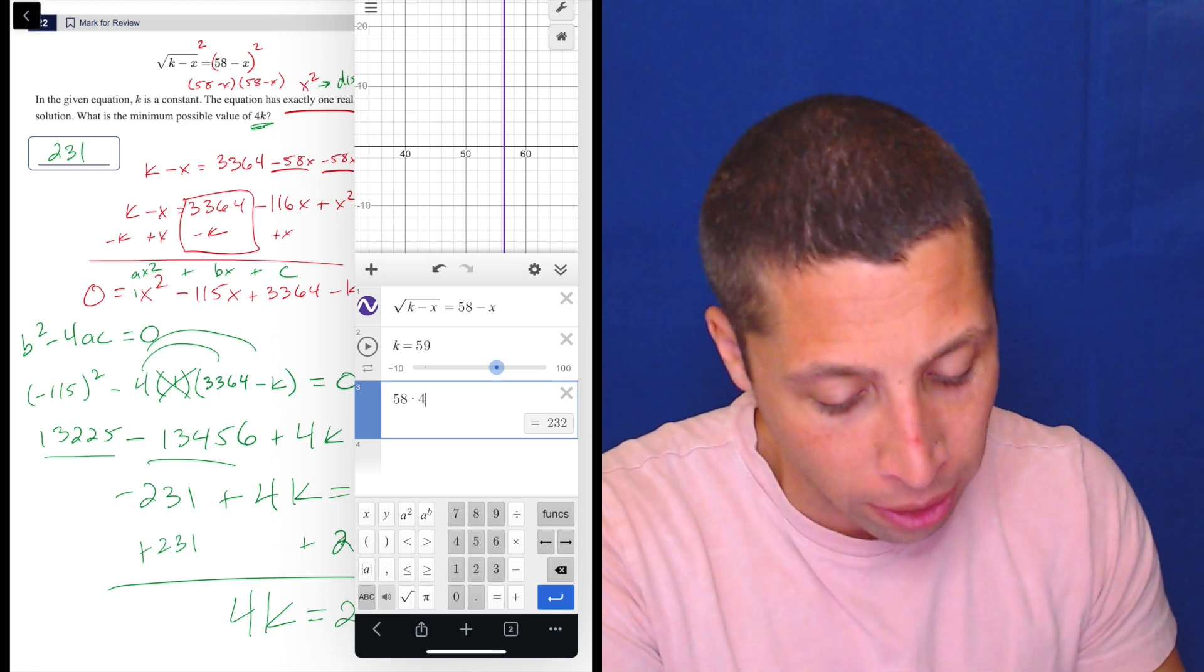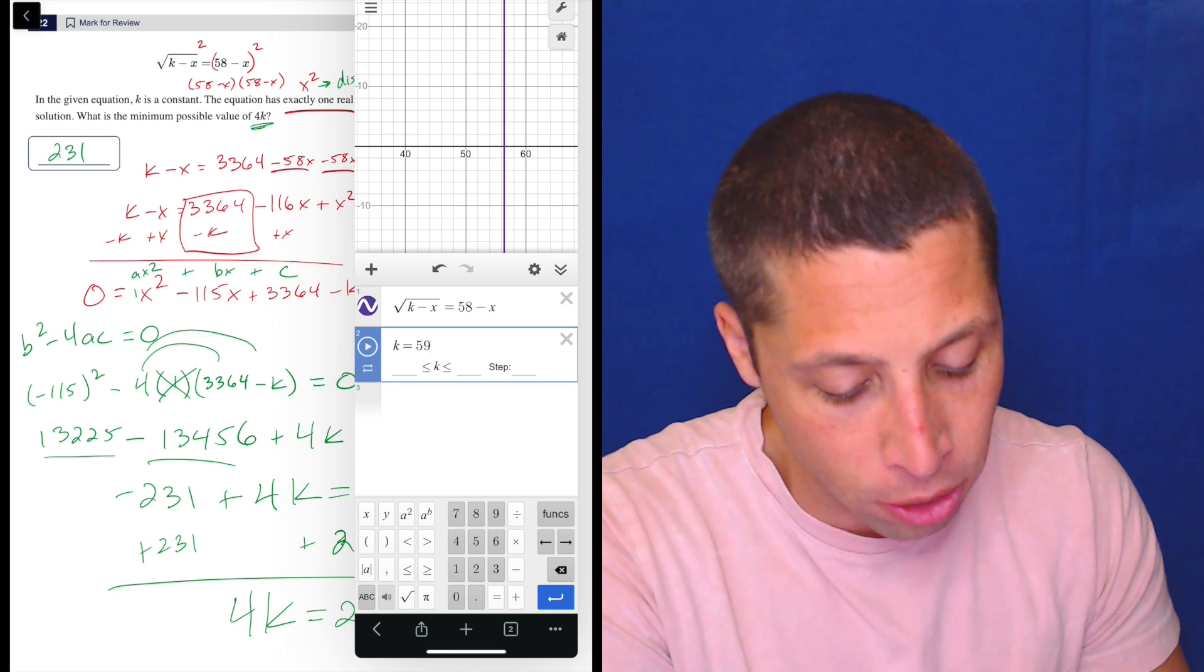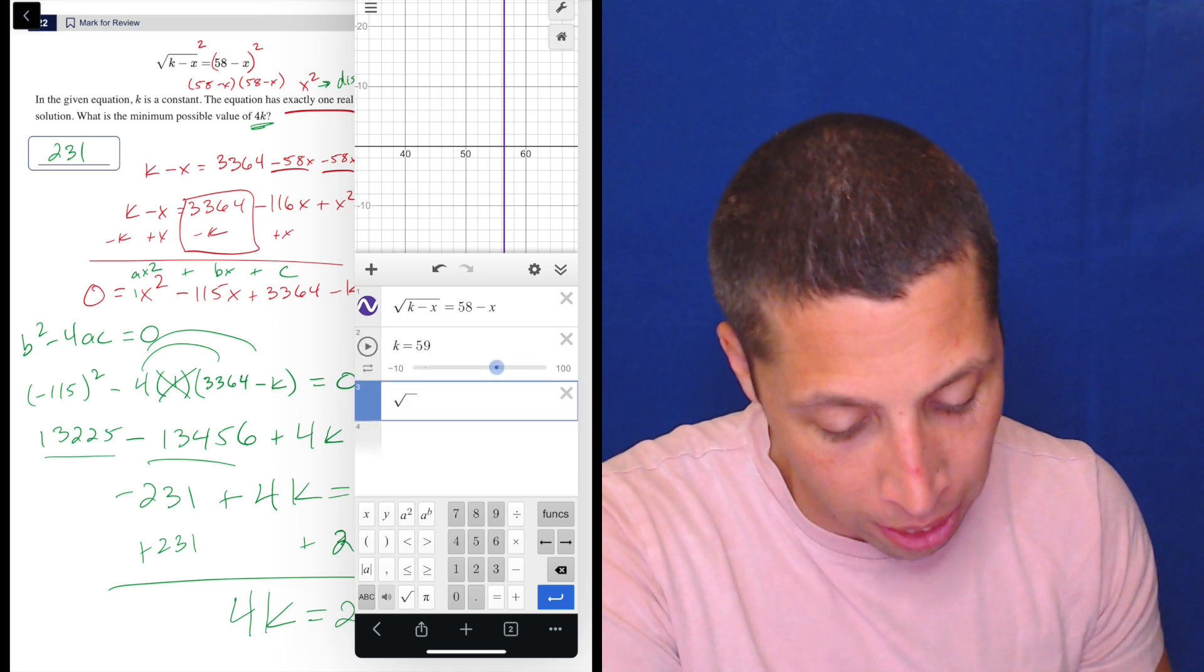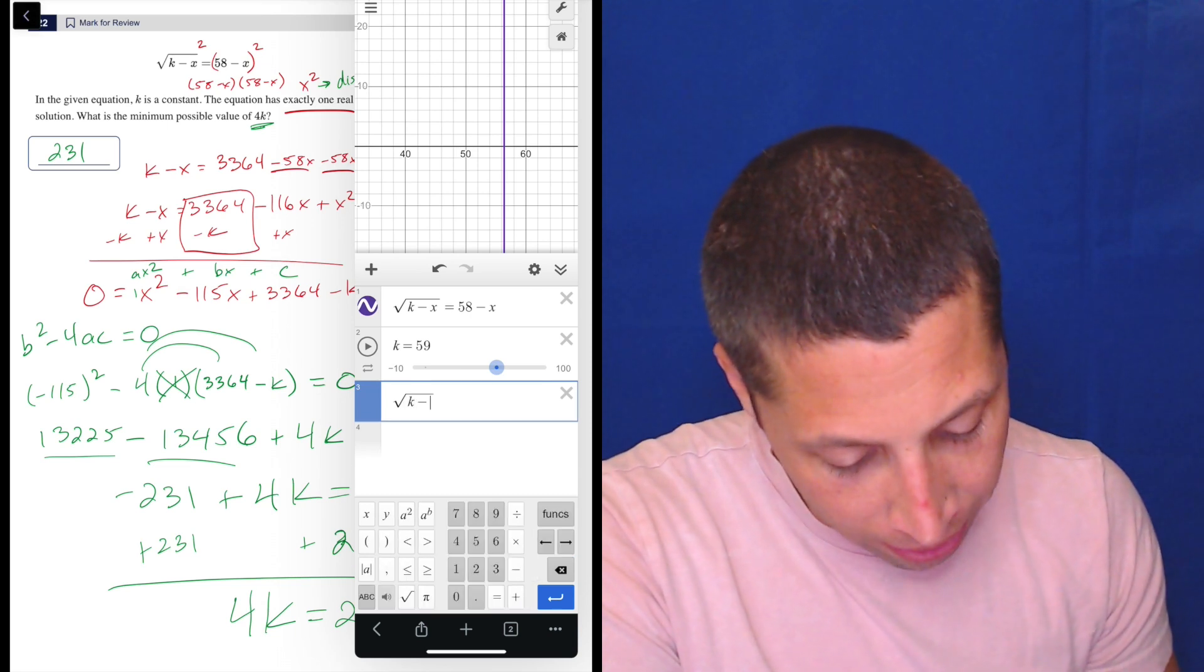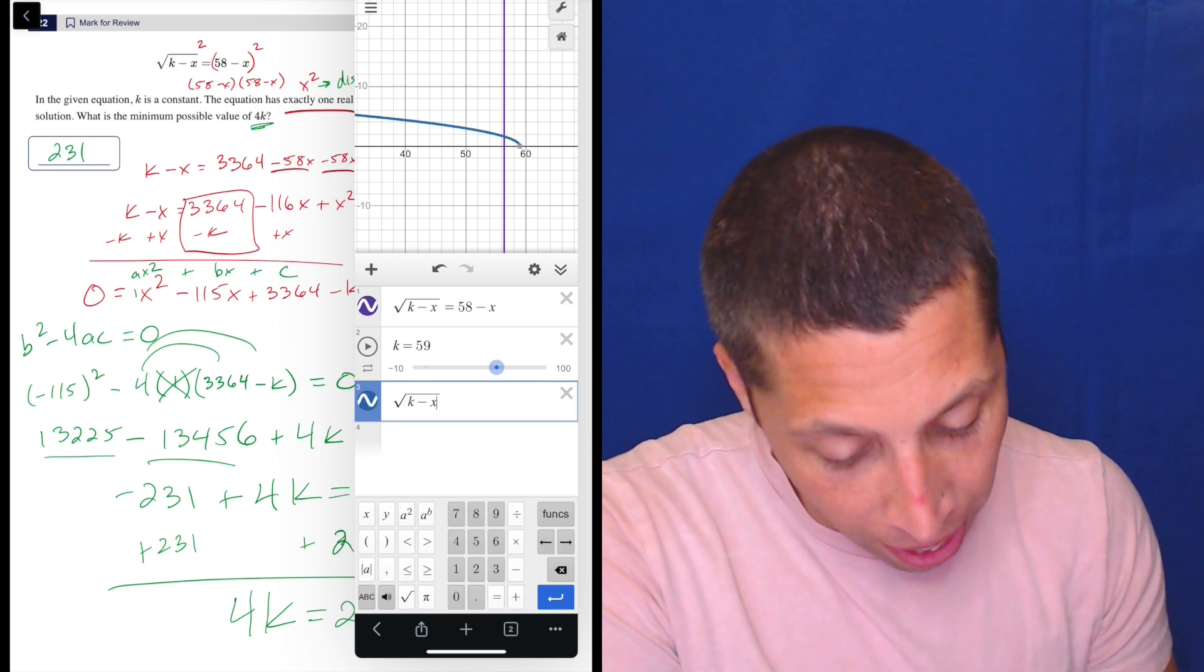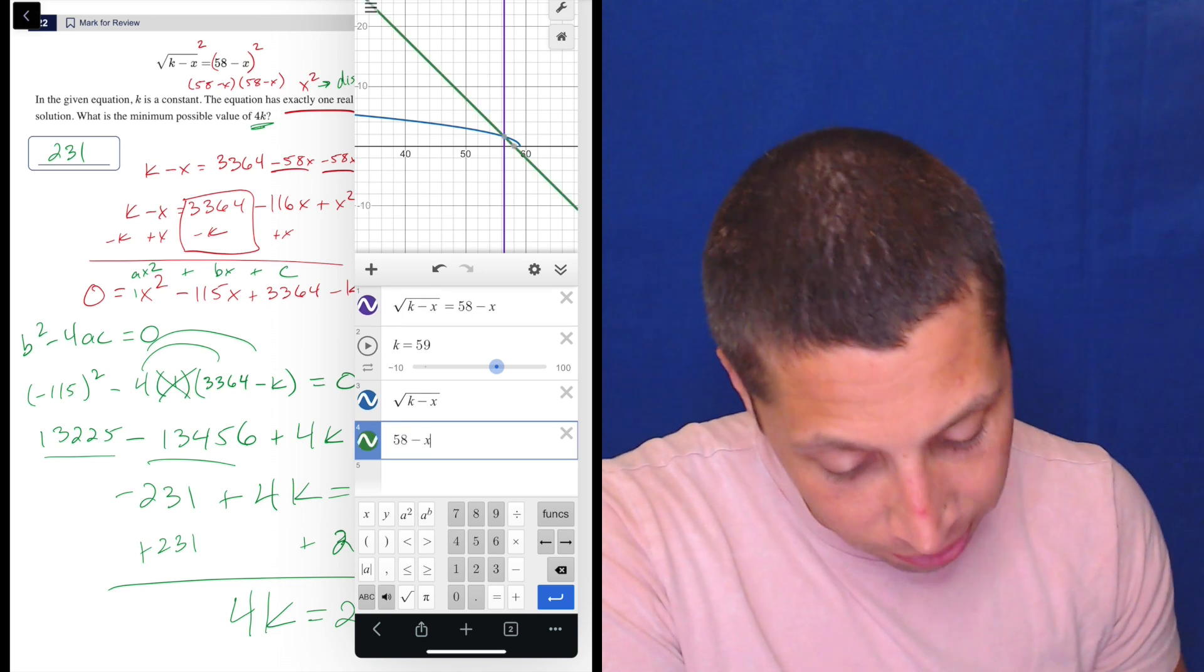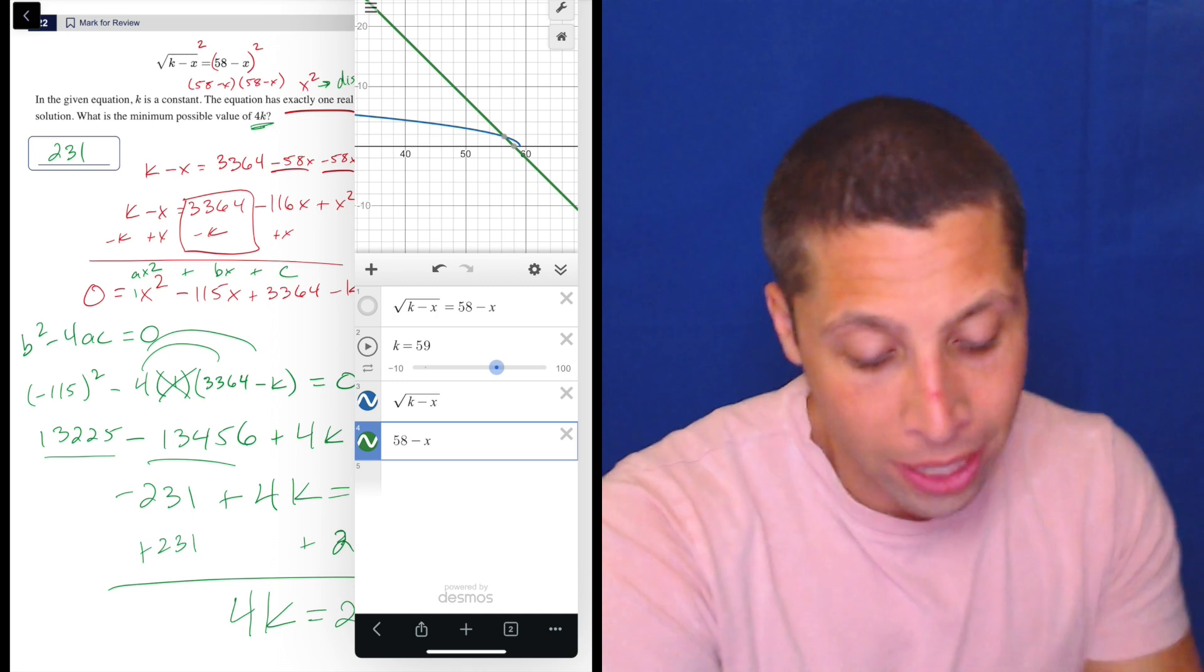Now, what we could do here, and I don't really understand what's happening, but what we basically need to do is instead of putting all of this stuff on one line, we have to split it up. So we have to do k minus x, and we have to do 58 minus x on two separate lines. Let me kill off this purple one.